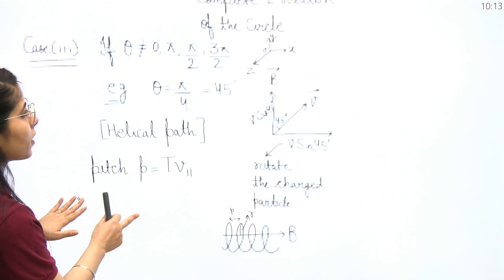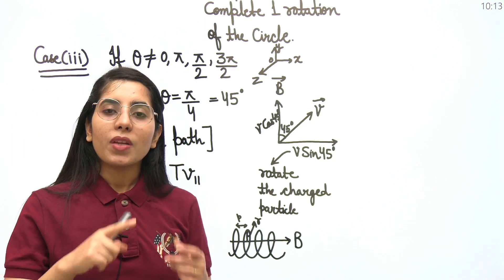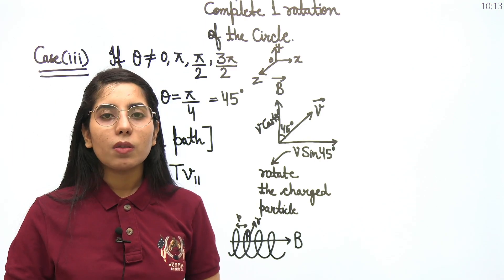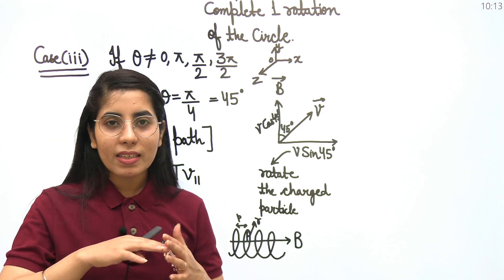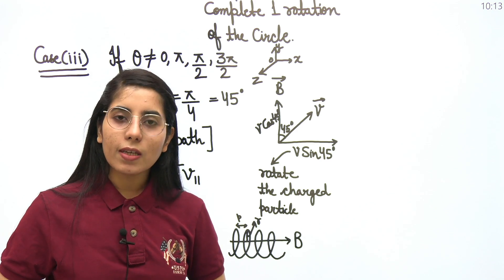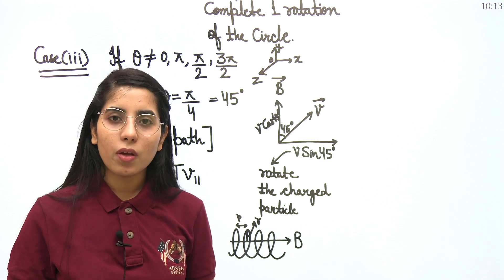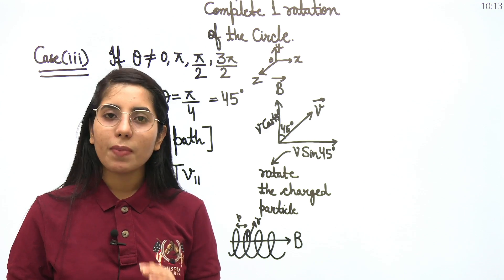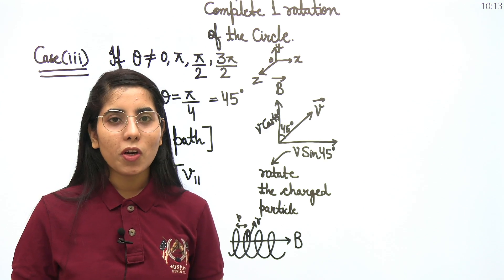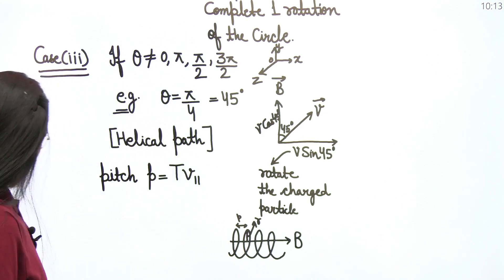I hope it is clear to all of you — the different types of trajectories and different paths which the particle follows as per the angle theta between V and B. Keep watching these videos in this series on magnetostatics and electromagnetic theory, as we will keep covering important concepts one by one. If you have any doubts, mention them in the comments and I will try to clarify them. Thank you so much everyone for watching this video till the end.